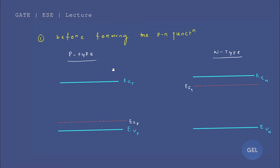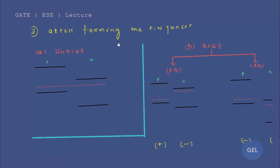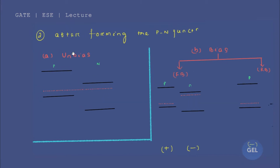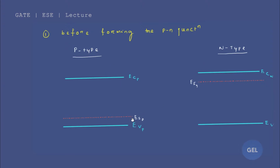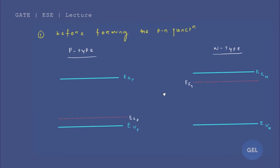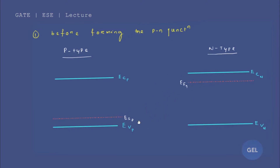Now let's join P-type and N-type together to form a PN Junction. After forming the PN Junction, we have two cases: unbiased and biased. Let's understand the unbiased case first. When we join P-type and N-type to form a PN Junction, both Fermi energy levels coincide. Always draw the Fermi energy level first — both Fermi energy levels coincide, so first join the Fermi energy level.